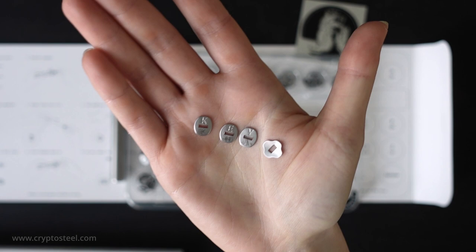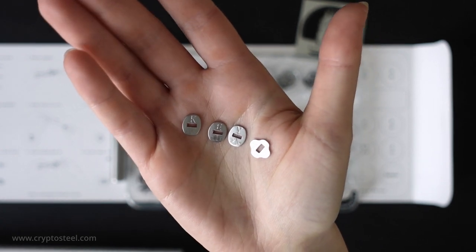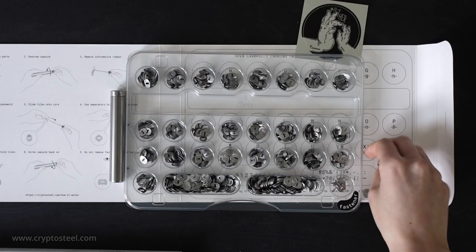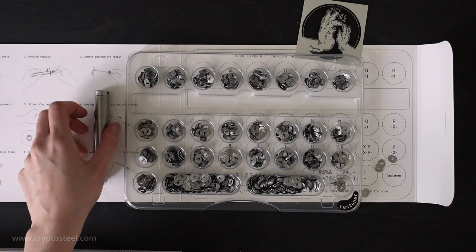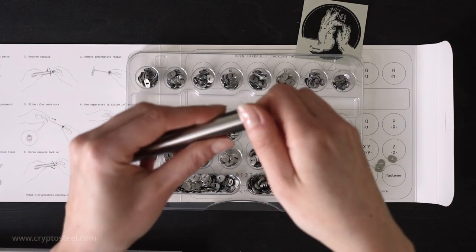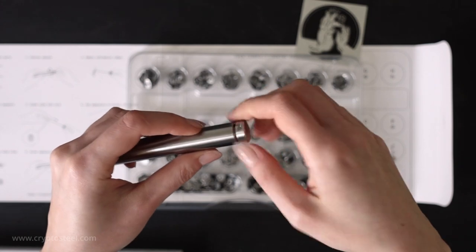This is a separator tile. It is used to set apart words that make up your recovery seed phrase, which is made up of four-letter words in the BIP-39 Mnemonic Seed Phrase Standard.